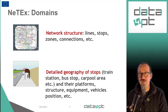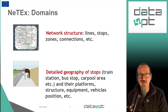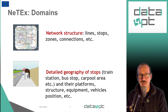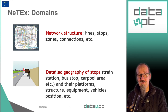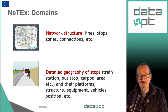NETEX is addressing a set of different domains. The first is the network description, where you describe the lines, the stops, the fare zones, the connections, etc. This is usually a topological description, the kind of description you would find on a schematic map. It is also important to be able to describe the geometry and the geographic layout of the network, especially for stops where you need to describe where the shelter is, where the vehicle is stopping, if there is any place to sit, etc. The entrance of the station is also an important thing. The geography is of course also covered by NETEX.